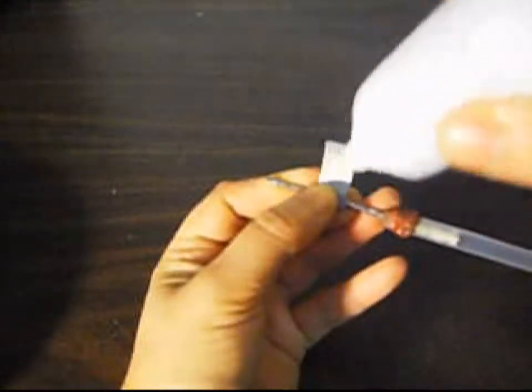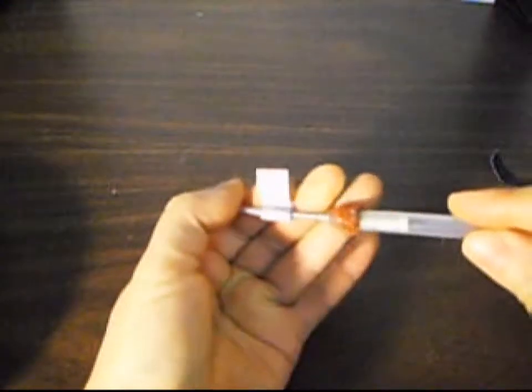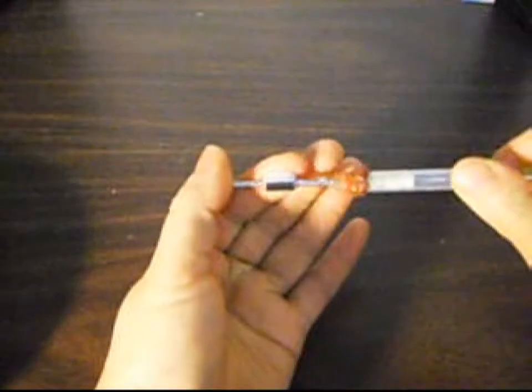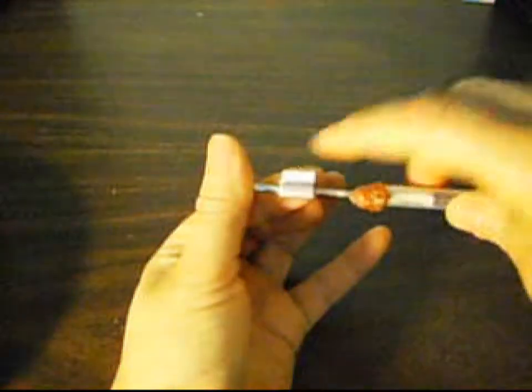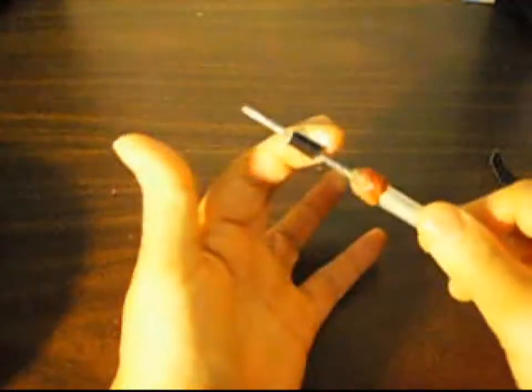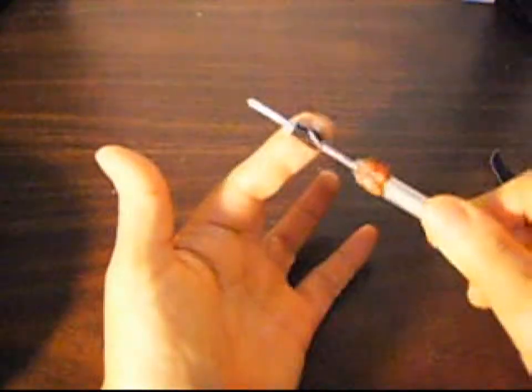Ponemos el resistol ahí, le damos la vuelta bien despacito así hasta que se quede la tira pegada a la cuentecita. Esta tira que está aquí, la punta de la tira tiene que quedar pegada.